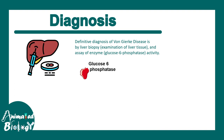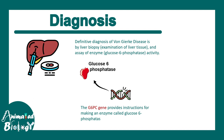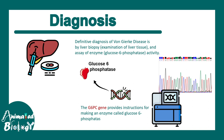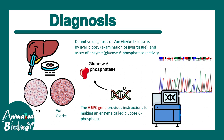The diagnosis is dependent on detection of glucose-6-phosphatase activity from a liver biopsy. A portion of the liver is taken up and can be immunostained or stained for the presence of glycogen. There are also genetic detection methods where the G6PC gene is looked at via sequencing methods and examined for mutations, though this is more expensive.